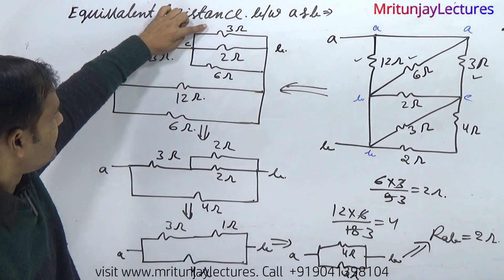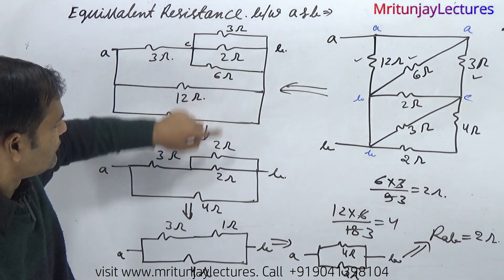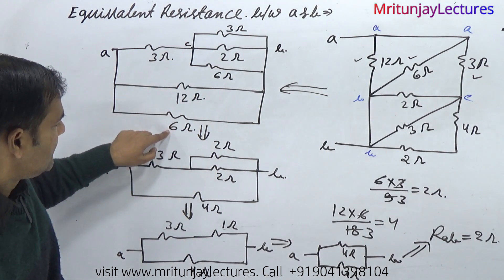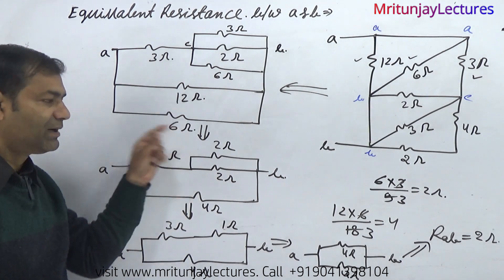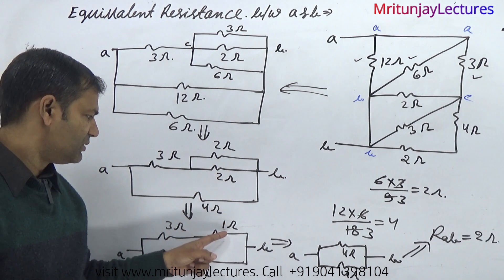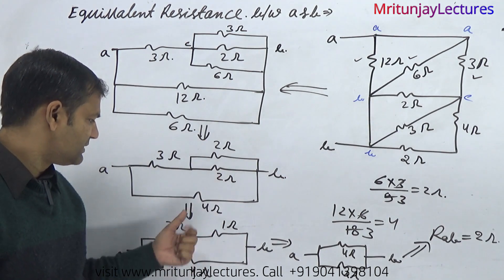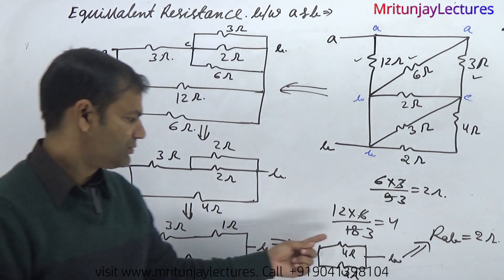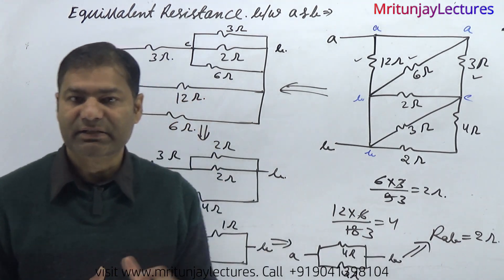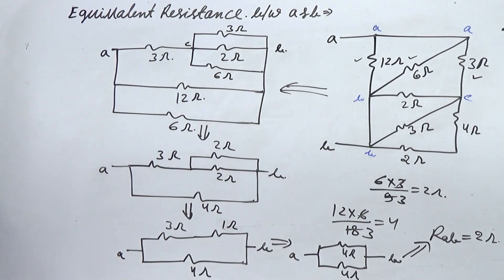Combination of these three in parallel: combination of these two we got 2 ohm. 2 ohm and 2 ohm, and 6 — combination of these two we got 4 ohm. Both are in parallel — after that these two that is 1 ohm. 3 ohm and 1 ohm are in series, that is 4 ohm, in parallel with 4 ohm. So 4 ohm and 4 ohm in parallel — combination is 2 ohm. That is the right answer.